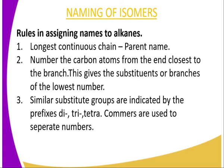Alkanes have what we call branching isomerism. What is isomerism? Isomerism is compounds having the same molecular formula but different structural formula. So, how do we name isomers? Naming of isomers, or naming in alkanes, we also refer to it as nomenclature. We assign rules — there are rules that we use to assign names to help us in naming these compounds.